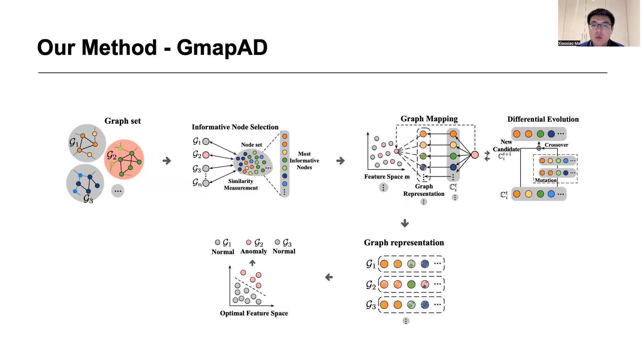Therefore, we propose GmapAD to investigate both intra-graph and cross-graph information. We first select a set of nodes from the entire graph set using differential evolution algorithm, and then map each graph into a vector space based on its similarity to the nodes. These selected nodes can be seen as a basis for detecting anomalies, since all normal graphs are similar to them, while anomalies are dissimilar.